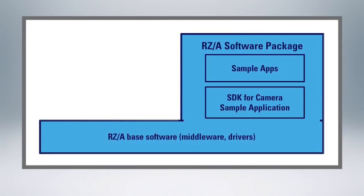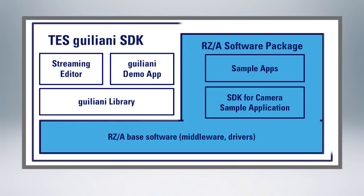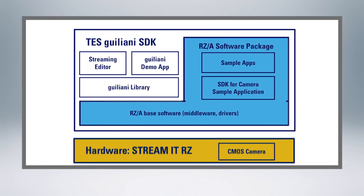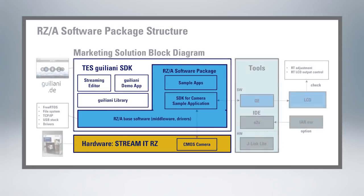The RZA software package was developed to significantly cut down development time for camera and GUI applications on the Renesas RZA microprocessor. It includes an SDK for the Test-Guiliani tool, a camera SDK, as well as the QE tool for real-time display adjustments.